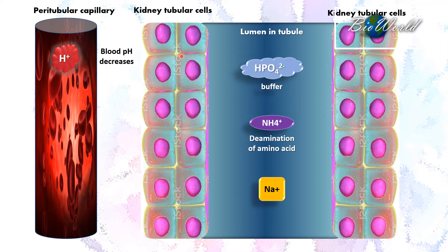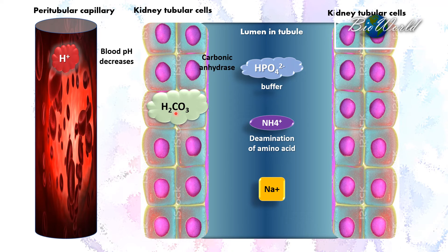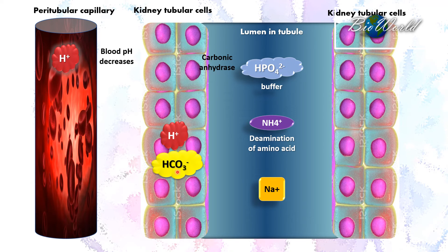The interesting thing about the tubular cells is that they can synthesize the enzyme carbonic anhydrase. You have learned about this enzyme when we studied Chapter 7, Gaseous Exchange, where we learned that red blood cells synthesize carbonic anhydrase. Now we also learn that the kidney cells synthesize carbonic anhydrase, which will combine carbon dioxide and water to form carbonic acid. Carbonic acid then ionizes into hydrogen ions and hydrogen carbonate ions.